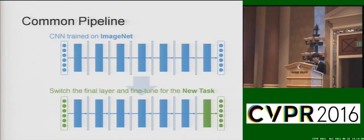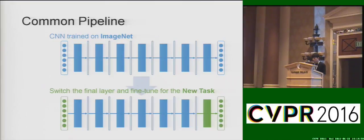This is the common pipeline for solving visual recognition problems with a convolutional neural network. Usually, a convolutional neural network trained on ImageNet is used as a pre-trained model. To adapt the pre-trained model to a target visual recognition problem, people usually switch a single layer within the network and fine-tune the whole network with the target visual recognition dataset. This common pipeline works quite well and has been applied to various visual recognition problems.